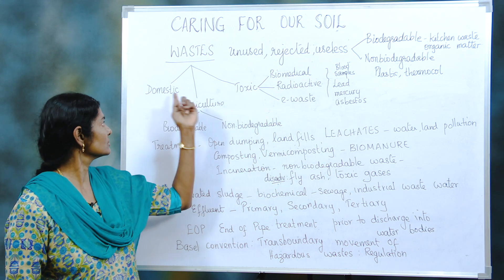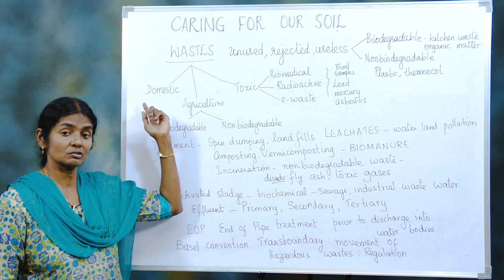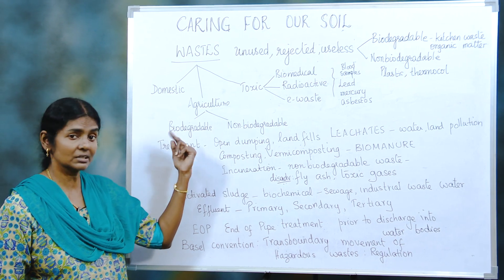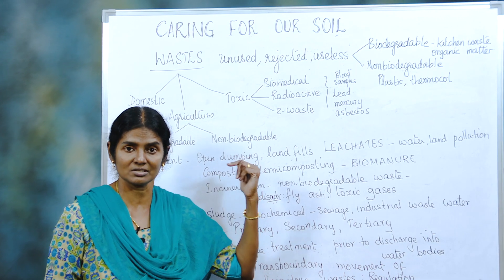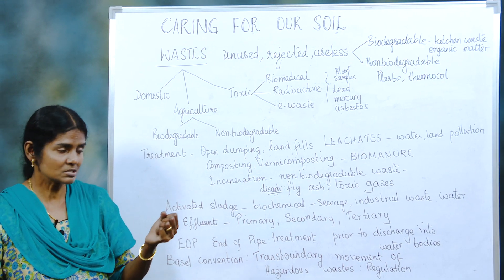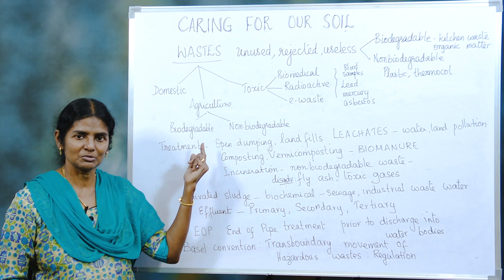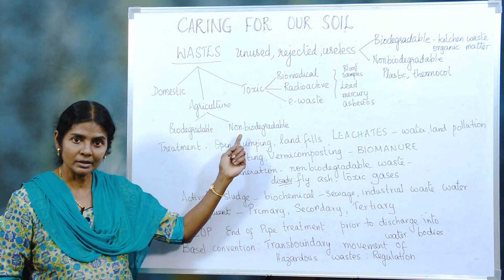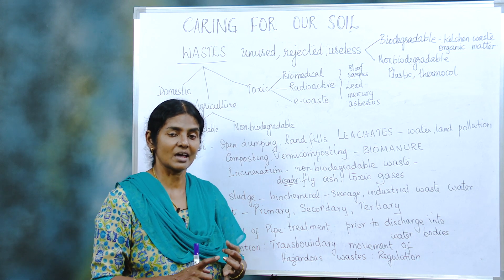Then you have classification based on the origin. You have domestic, industrial waste, and agricultural waste. Agricultural waste is again divided into biodegradable and non-biodegradable. The husk and normal organic waste, dead plants and such things will form biomanure — that is biodegradable, it degrades and breaks down. But there are non-biodegradable wastes like chemical fertilizers and pesticides.